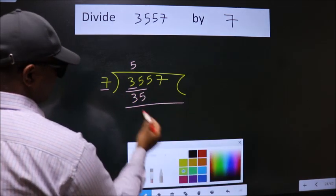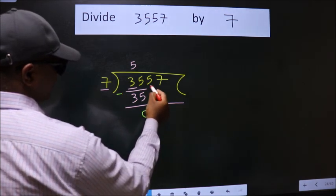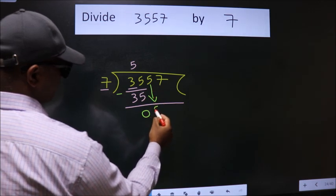Now, we should subtract. We get 0. After this, bring down the beside number. So, 5 down.